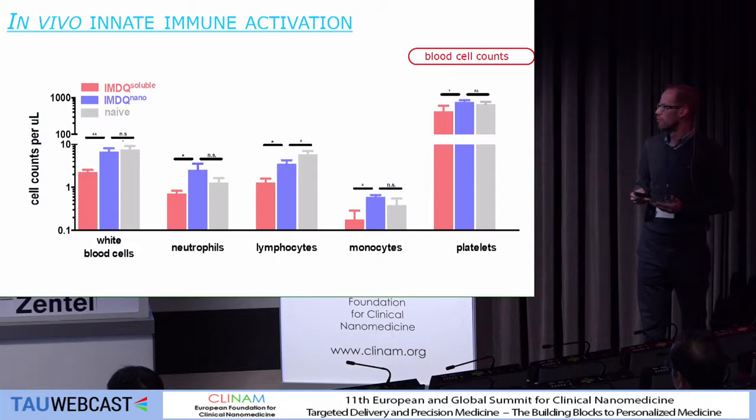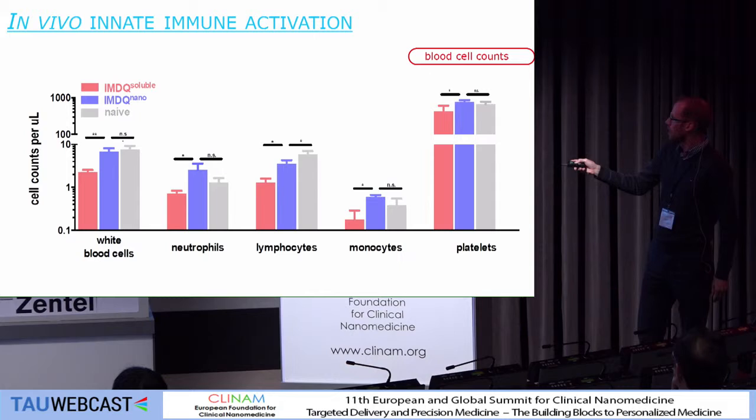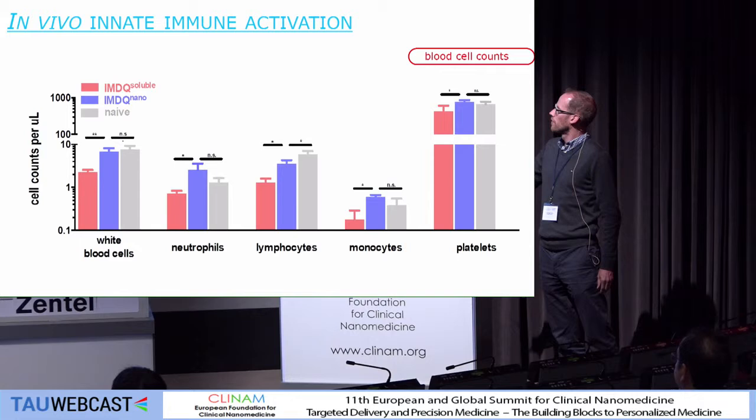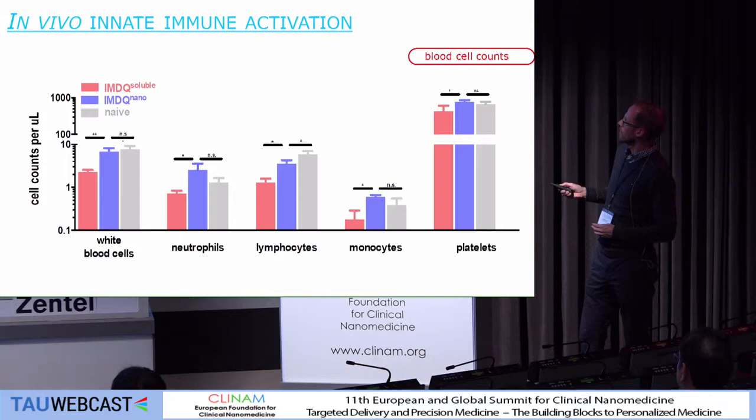This is also translated if we look at the numbers of different blood cell subsets in circulation. Administration of the TLR agonist in soluble form leads to a significant decrease in all of these key blood cell subsets, whereas the administration of the TLR agonist in nanoparticle form has much less detrimental effects — really reducing systemic toxicity by conjugating the TLR agonist to a nanoparticle.